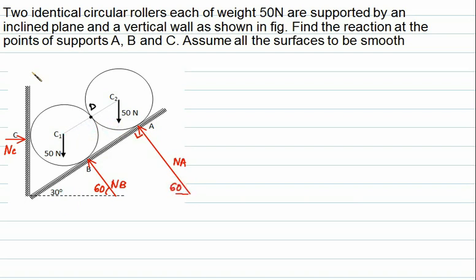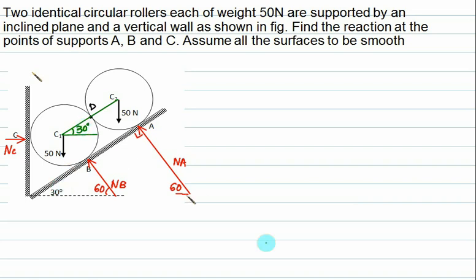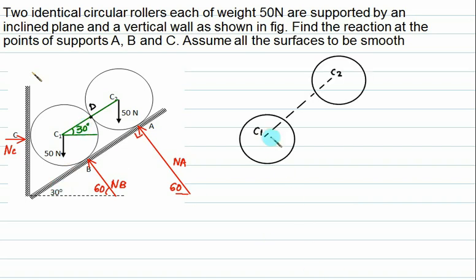The line passing through C1 and C2 is parallel to the inclined plane because the cylinders have equal height. Therefore the angle made by the center-to-center line is the same as the inclined plane angle. This angle equals 30°, and the alternate angle is also 30°.